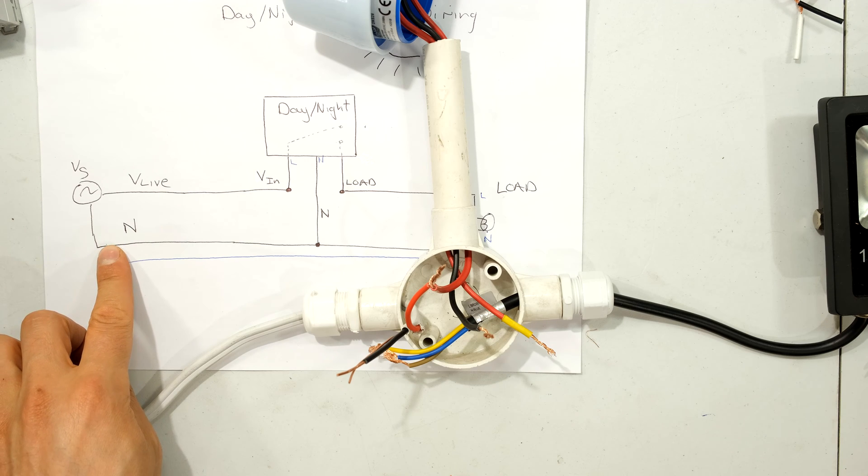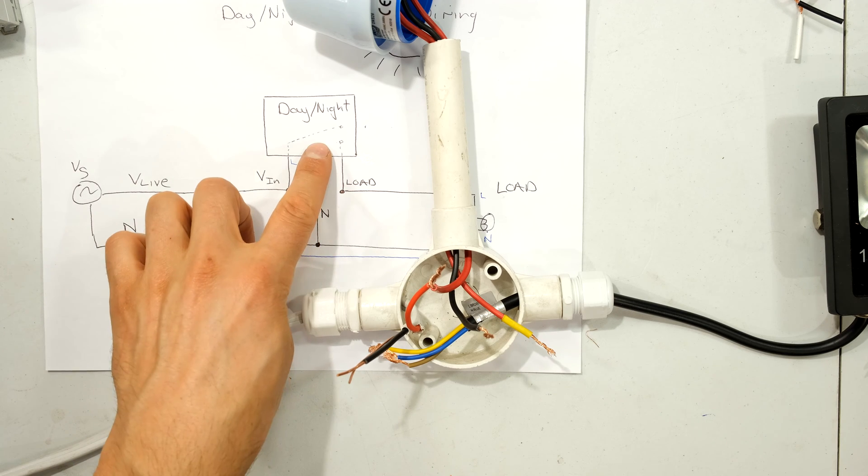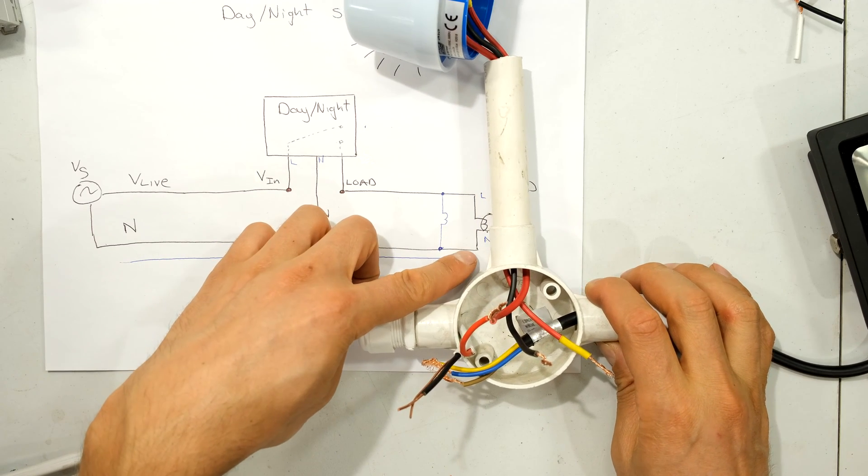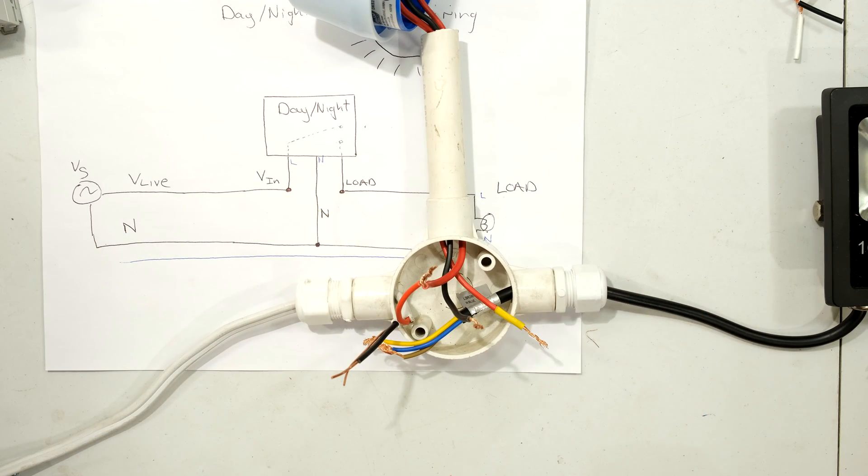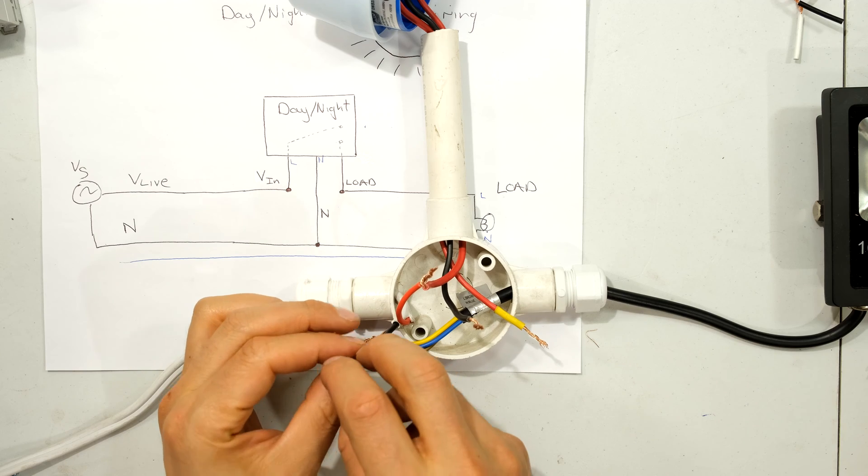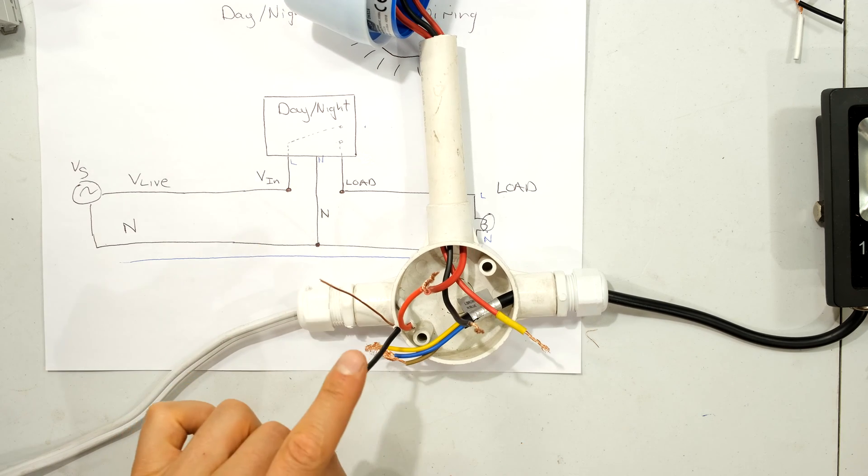Right, now the neutral from the supply goes to the day-night switch and also feeds the load, my light. So that means I'm going to have three wires joined together. So the neutral from my supply is this black wire over here.